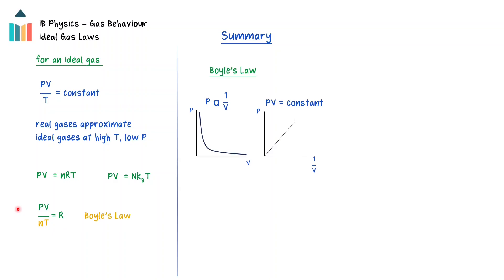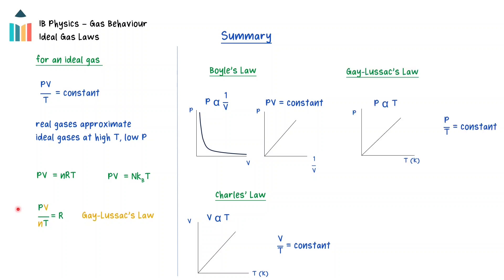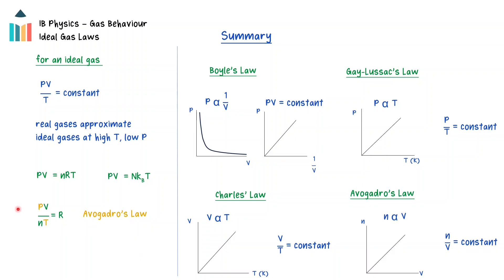Boyle's law states that under constant temperature and number of moles, the pressure of an ideal gas is inversely proportional to its volume. Charles's law states that under constant pressure and number of moles, the volume of an ideal gas is directly proportional to its absolute temperature. Gay-Lussac's law, also known as the pressure law, states that under constant volume and number of moles, the pressure of an ideal gas is directly proportional to its absolute temperature. Avogadro's law states that under constant pressure and temperature, the number of moles of a gas is directly proportional to its volume.